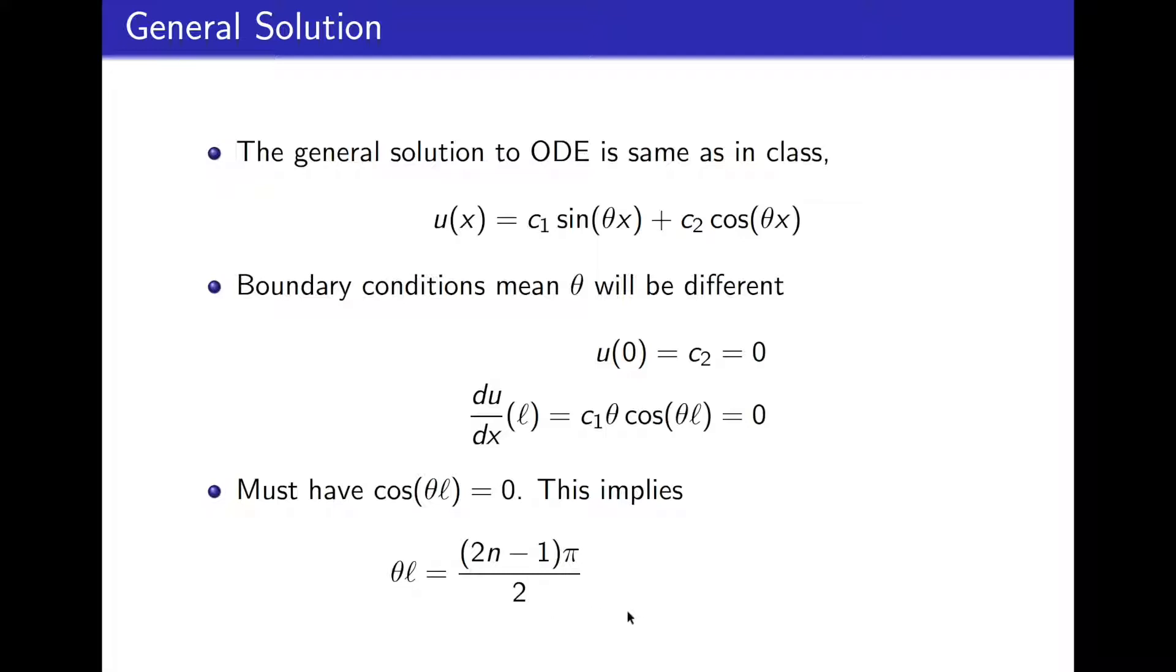because cosine is equal to 0 at values like pi over 2, 3 pi over 2, 5 pi over 2, 7 pi over 2. And dividing through by L, we see that theta will be 2n minus 1, some odd integer, times pi divided by 2L.